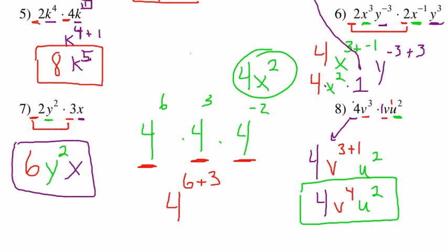Four to the sixth, four cubed, and four to the negative two. So we can add that as saying six plus three plus negative two. And then that will all come down to be 4 to the seventh power.